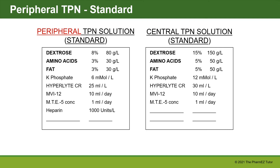Here's the peripheral standard TPN solution, composed of dextrose 8%, amino acid 3%, and fat 3%. Peripheral solutions need lower osmolarity because they are infused through a peripheral vein. Potassium phosphate is reduced to 6 millimoles per liter and hyperlite is 25 mL per liter, in contrast to the central TPN solution, which has higher amounts of electrolytes and macronutrients.